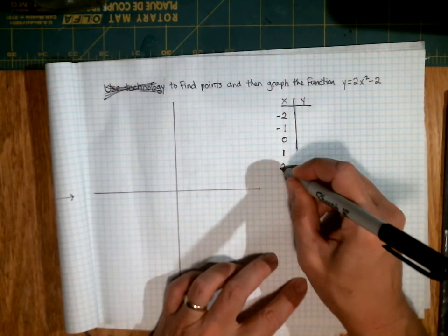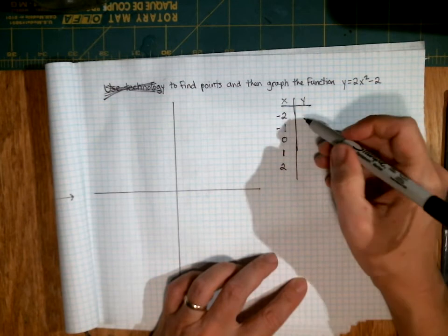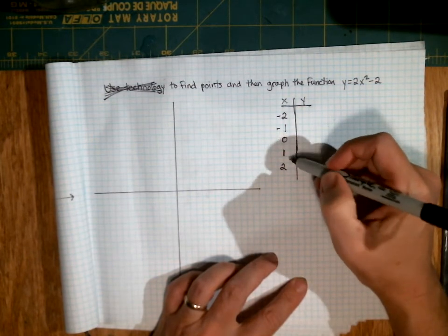But so far we're just going to choose these five x values: negative 2, negative 1, 0, 1, and 2.